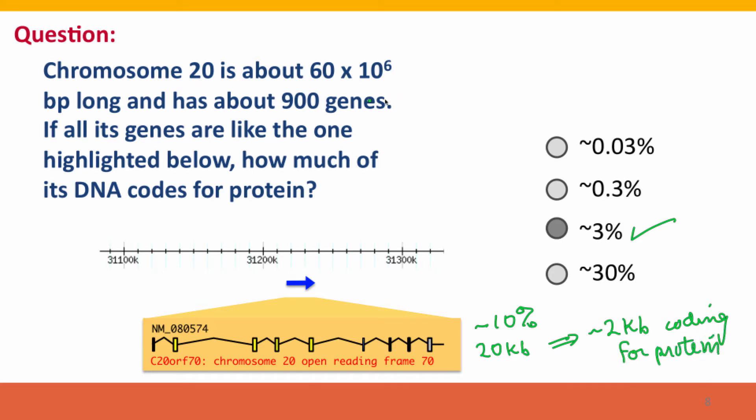There's about 900 genes on the chromosome, and if they're all like this one, as we're assuming, that means there's about 1800 kb, 1.8 million base pairs on this chromosome code for protein.